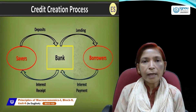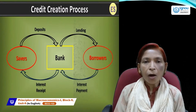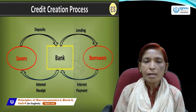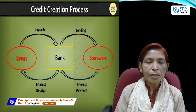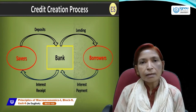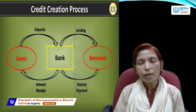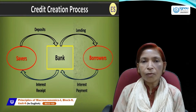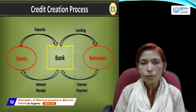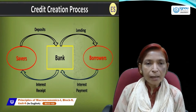The next topic is credit creation process or money multiplier. Credit creation is the main function of commercial banks. Commercial banks take deposits from the public and provide loans and advance facilities to the public, investors, businessmen, or firms. Commercial banks create credit while the central bank controls it.